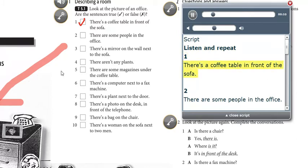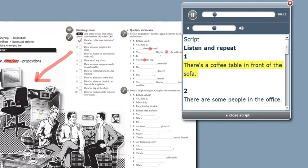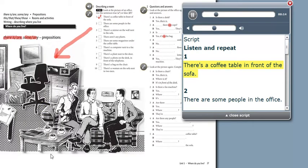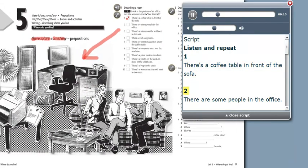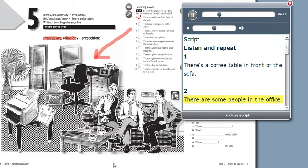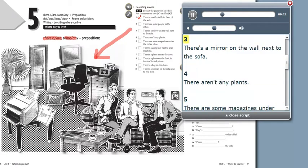There's a coffee table in front of the sofa. Two, there are some people in the office. Three, there's a mirror on the wall next to the sofa. Four, there aren't any plants.